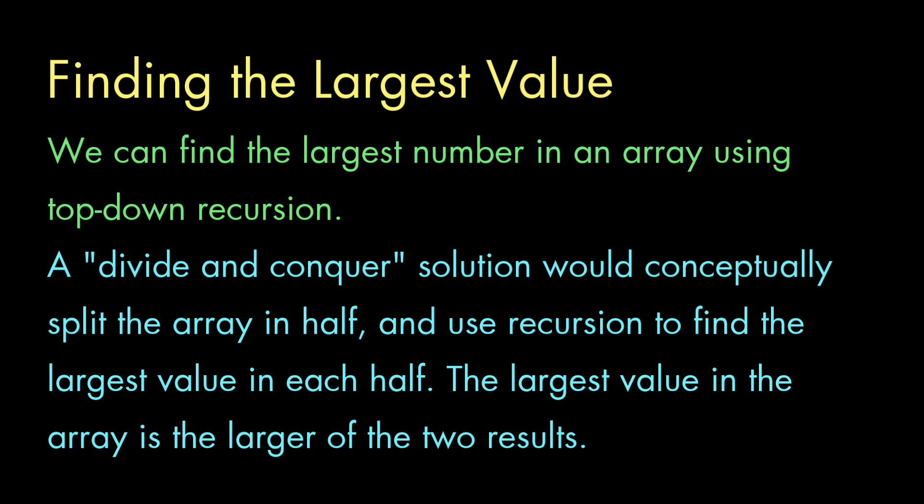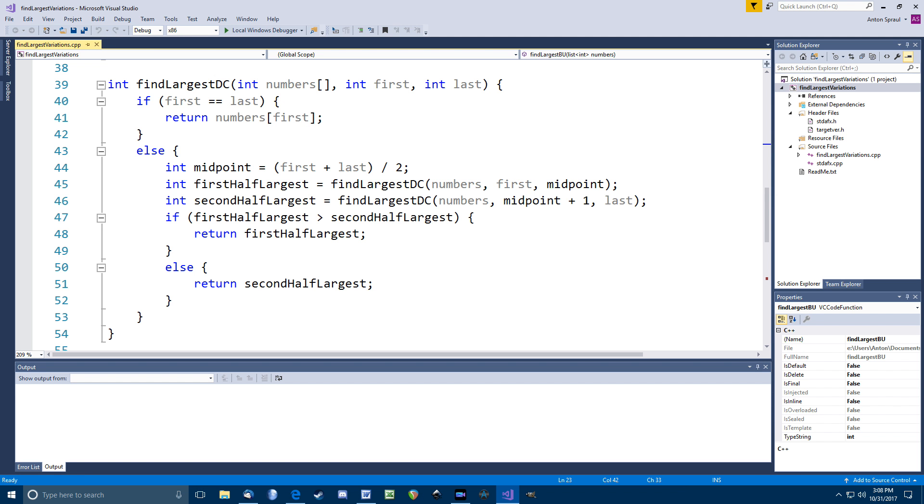Suppose we wanted to do a divide-and-conquer solution. We would conceptually divide the array in half and make recursive calls to find the largest value in each half. Then the largest value in the entire array is the largest of those two returned values. And here's a function that implements this idea. We've got parameters to specify the first and last positions in the array. So the array itself is always the same array with the same number of values, and we just manipulate these parameters to tell the function which portion of the array it should process.